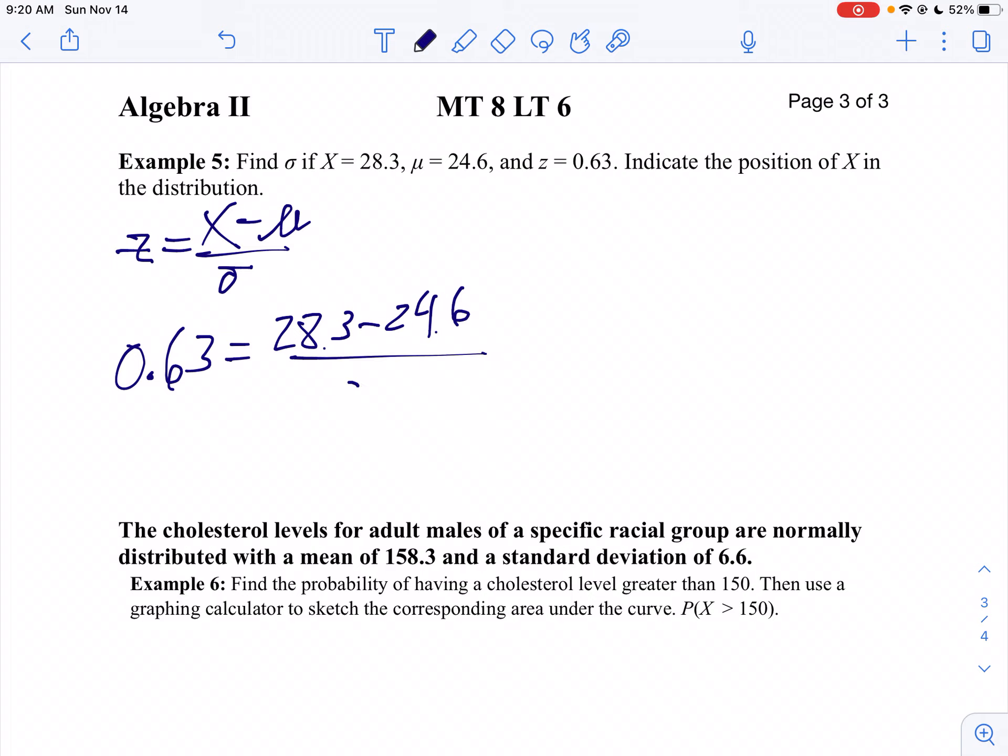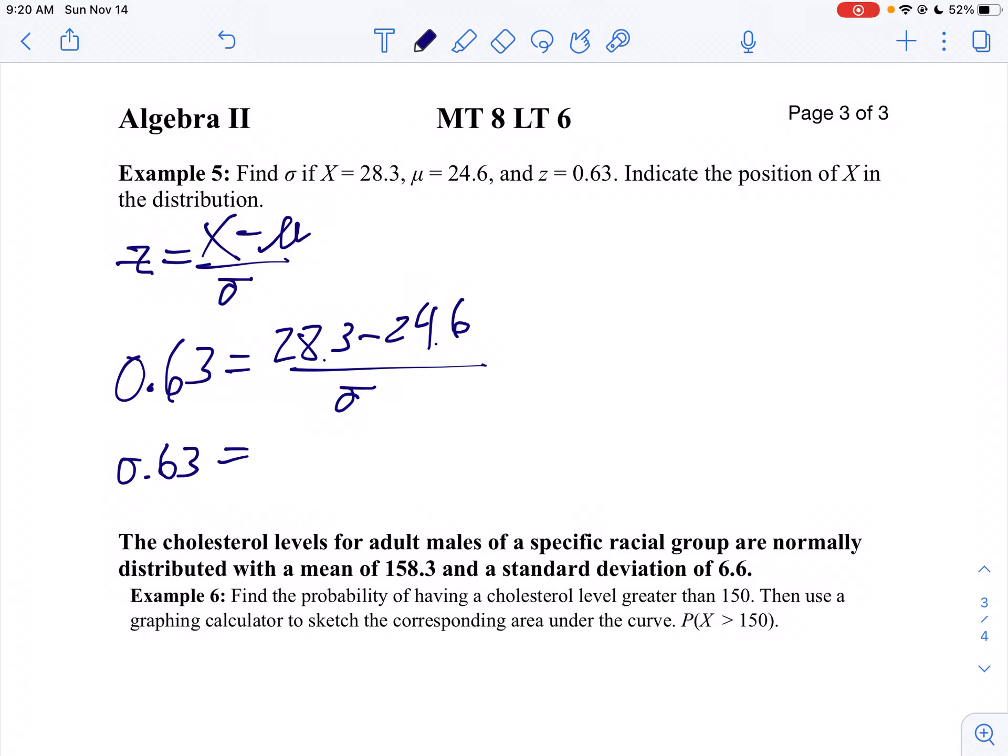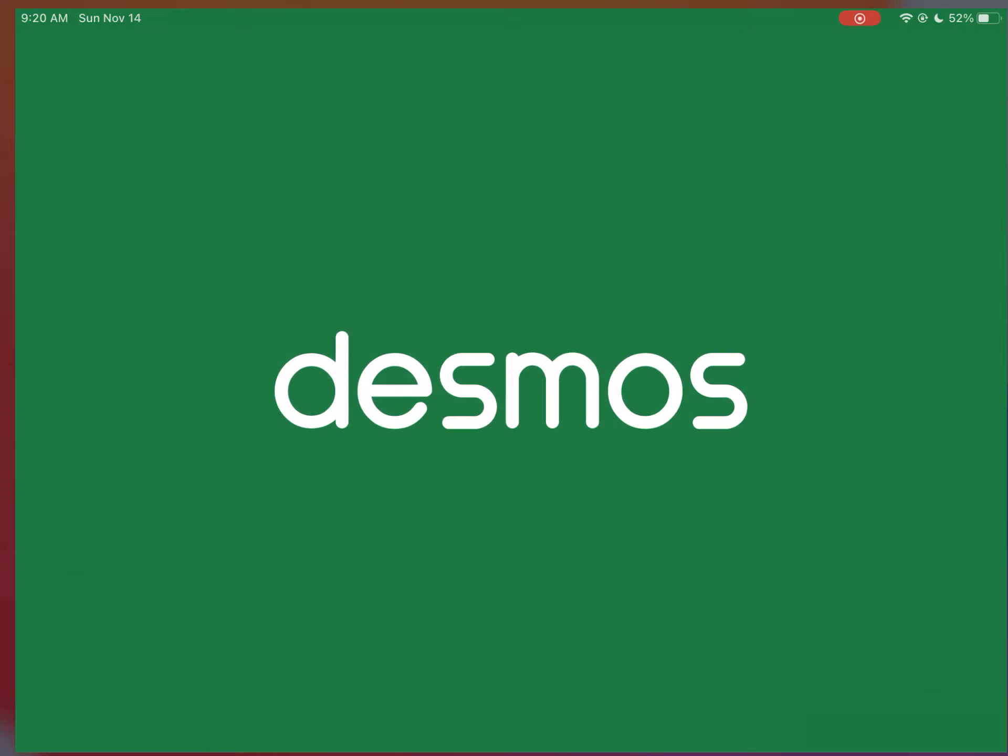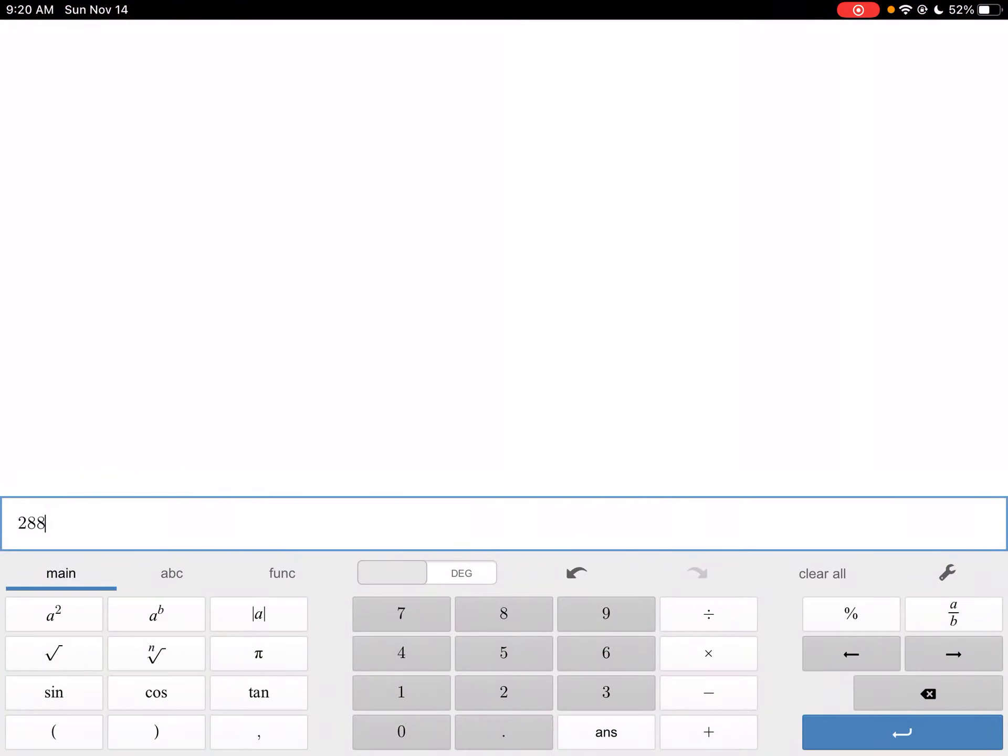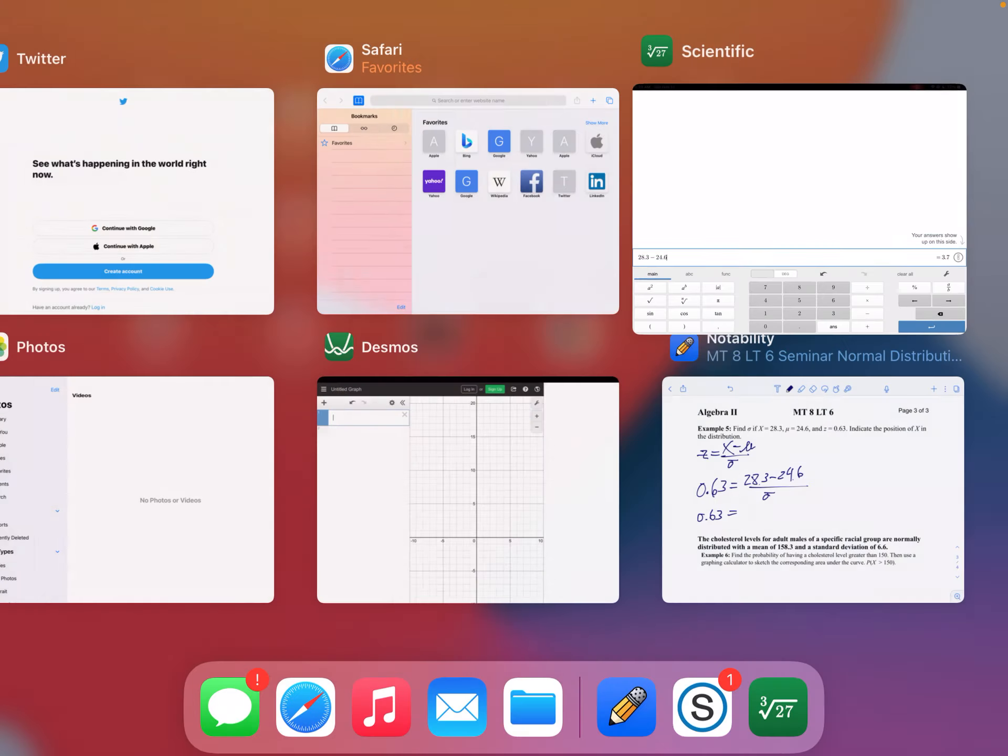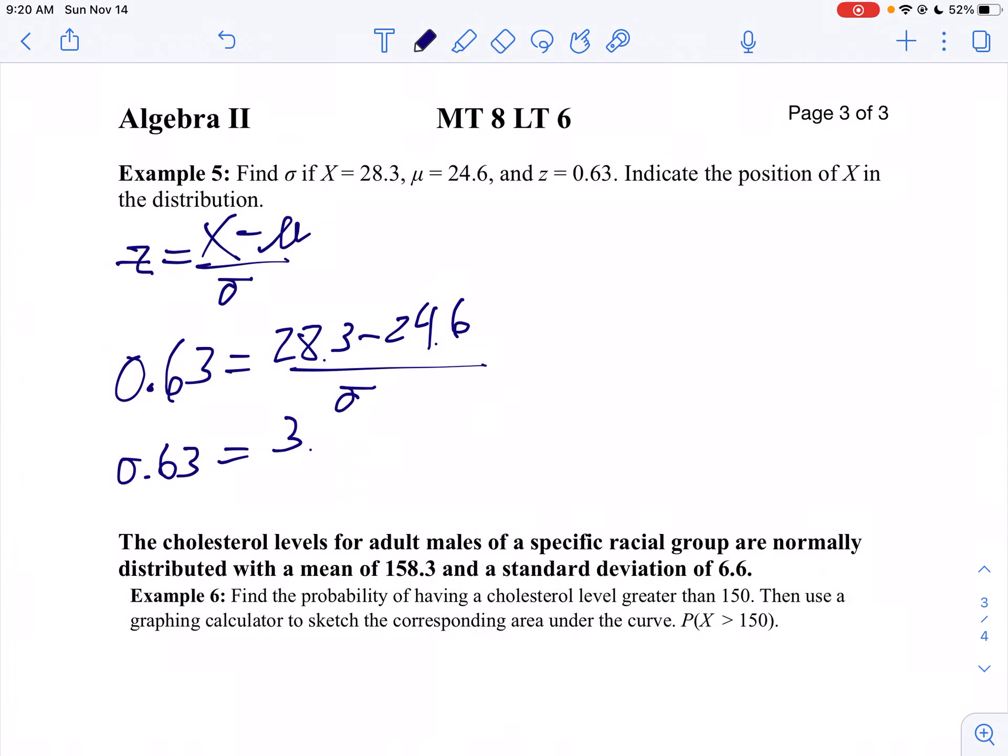I want to find the standard deviation. So I'm going to simplify that just a tad. So 0.63 equals, let's take 28.3 minus 24.6. That simplifies to 3.7. So I've got 3.7 divided by my standard deviation equals 0.63.